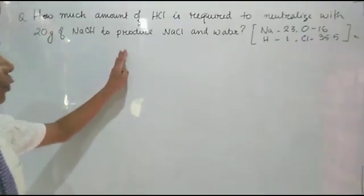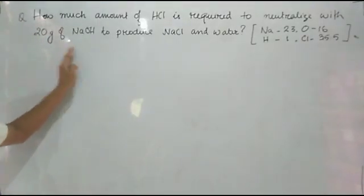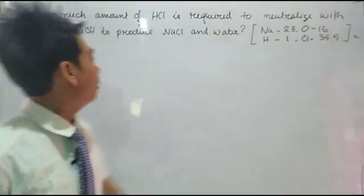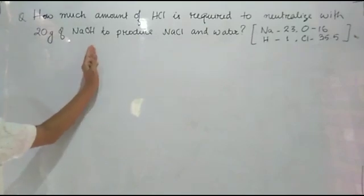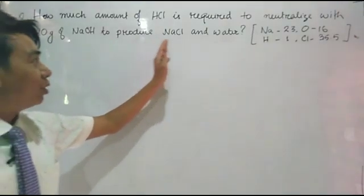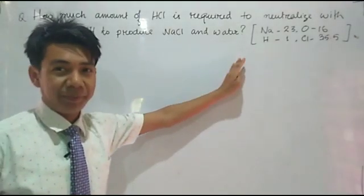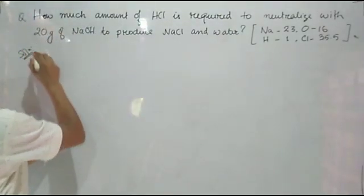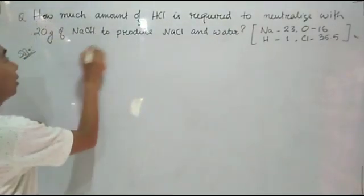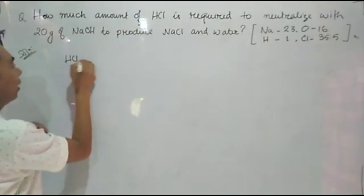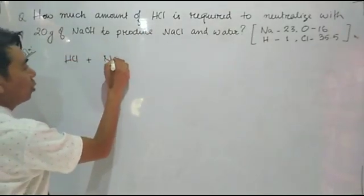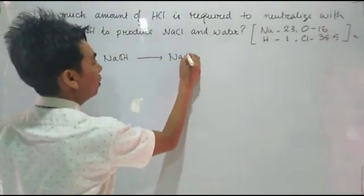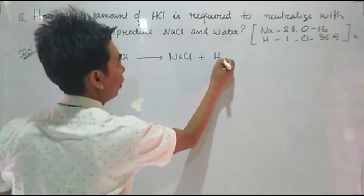Now this is the question. Let's read: How much amount of HCl is required to neutralize with 20 grams of sodium hydroxide to produce sodium chloride and water? At first, you have to write down the chemical reaction. Here, HCl plus sodium hydroxide produces sodium chloride and water.